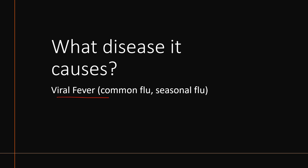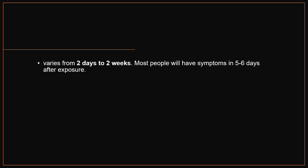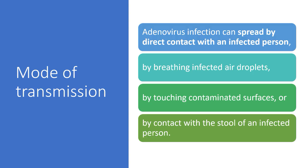The incubation period varies from two days to two weeks, and most people will have symptoms five to six days after exposure. Transmission can occur by direct contact with an infected person, by breathing infected air through sneezing or coughing, by touching contaminated surfaces, or by contact with the stool of an infected person. As the virus is highly symptomatic, its transmissibility is also higher.